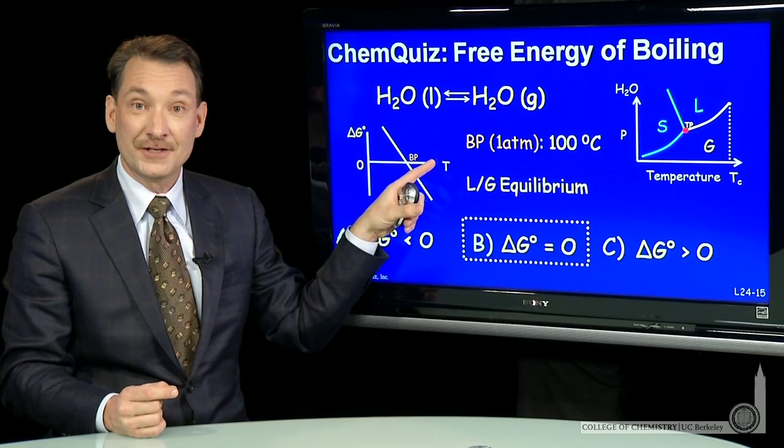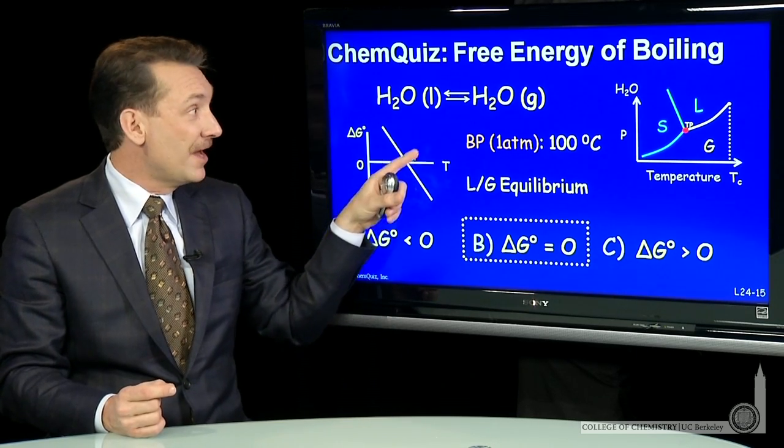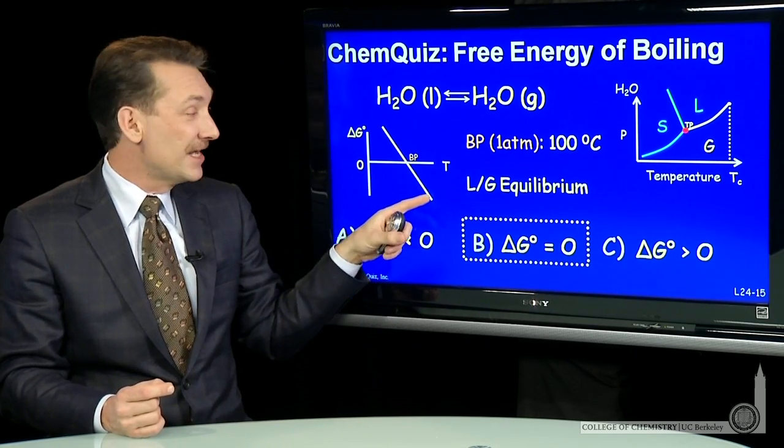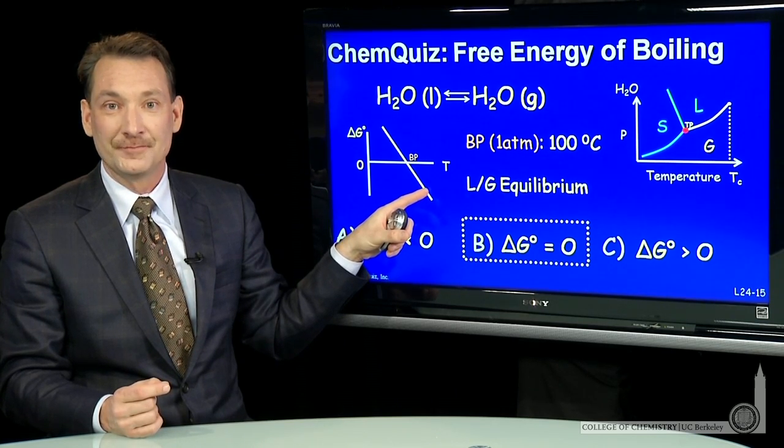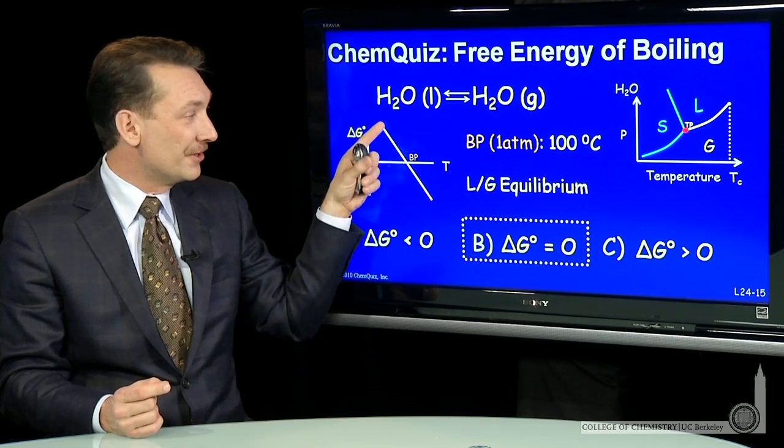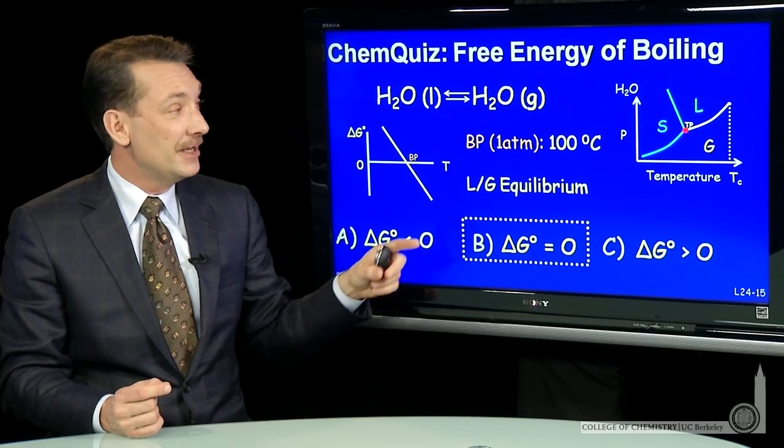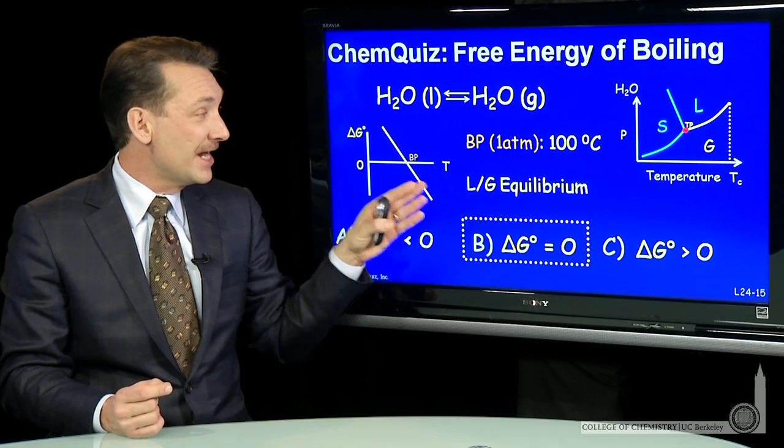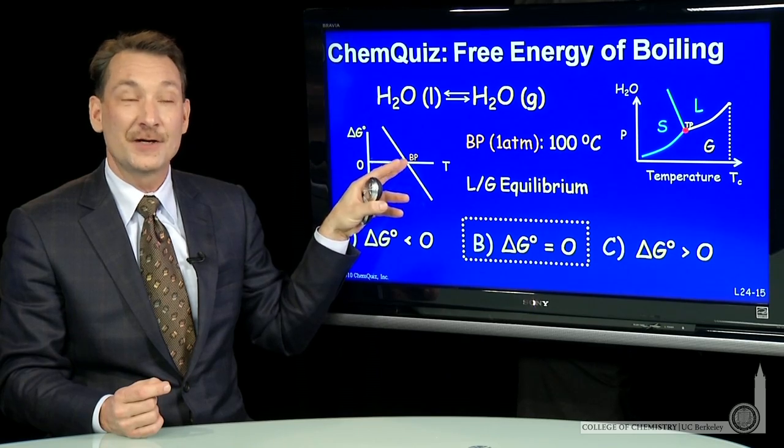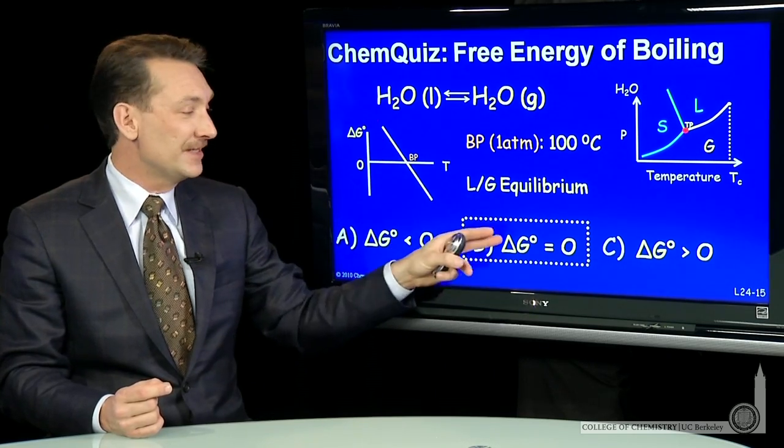And as I go to higher temperatures, then I have the one atmosphere of gas is the favored state of the system. So, delta G standard is a function of temperature. In this case, I'm right at the equilibrium where the gas and the liquid are equally favored.